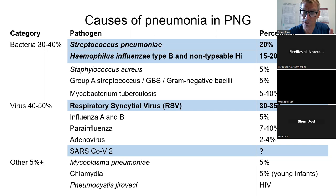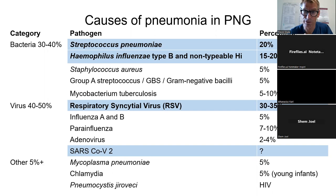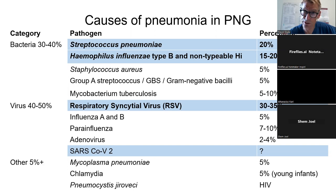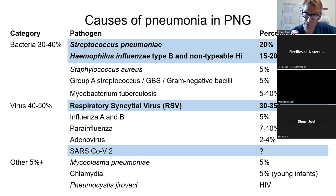Still about 20% of all pneumonia is due to the pneumococcus — Streptococcus pneumoniae — the most common bacterial cause. A bit less, around 15 to 20%, are due to Haemophilus influenzae, including type b and other types. So about 40% of pneumonias are due to these two most common bacteria. It used to be a higher proportion, but now we have the conjugate pneumococcal vaccine (PCV) and the Hib vaccine, so the proportion due to these bacteria is somewhat less.